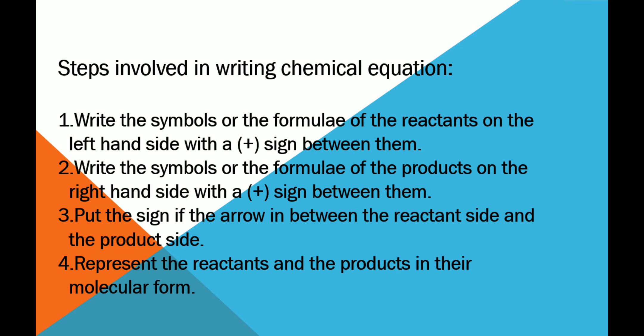Now, steps involved in writing chemical equation. Number one, write the symbols or the formulae of the reactants on the left hand side with a positive sign between them. Third one, put the sign of the arrow in between the reactant side and the product side. Fourth one, represent the reactants and the products in their molecular form.